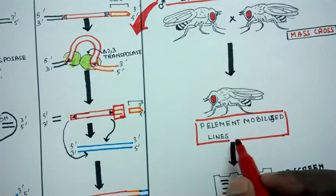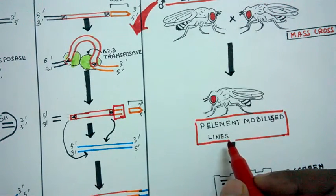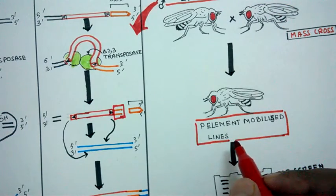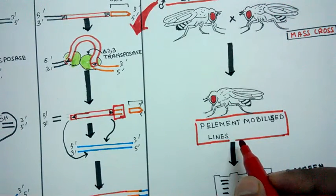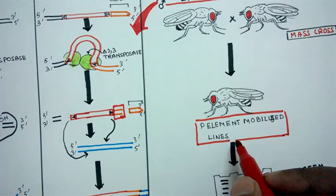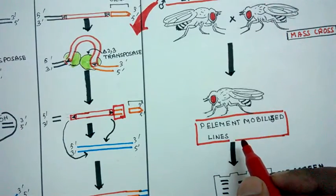From these P-element lines, maybe 400 or 500 lines, you have to screen. You have to screen and find your mutant. You have to fish out of all these lines and you have to find your mutant.